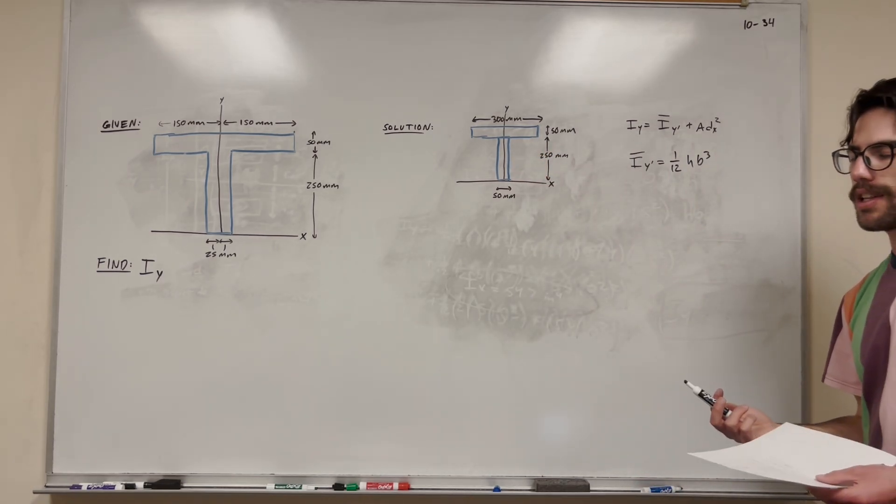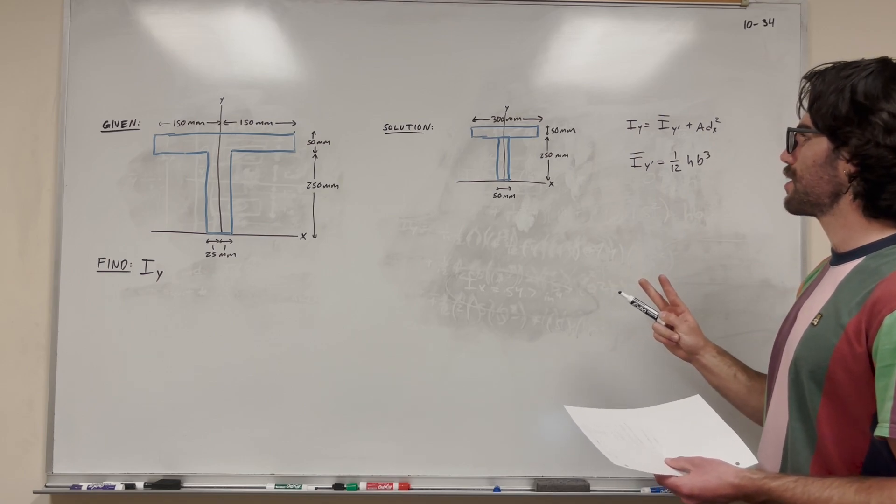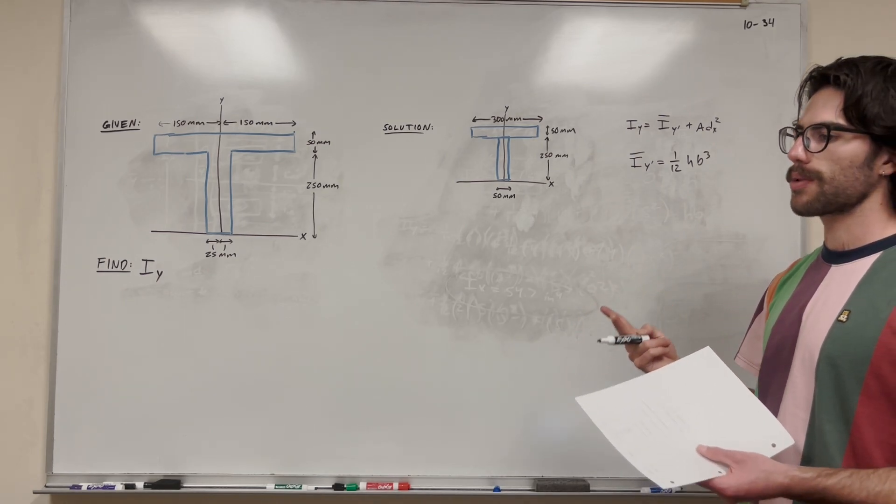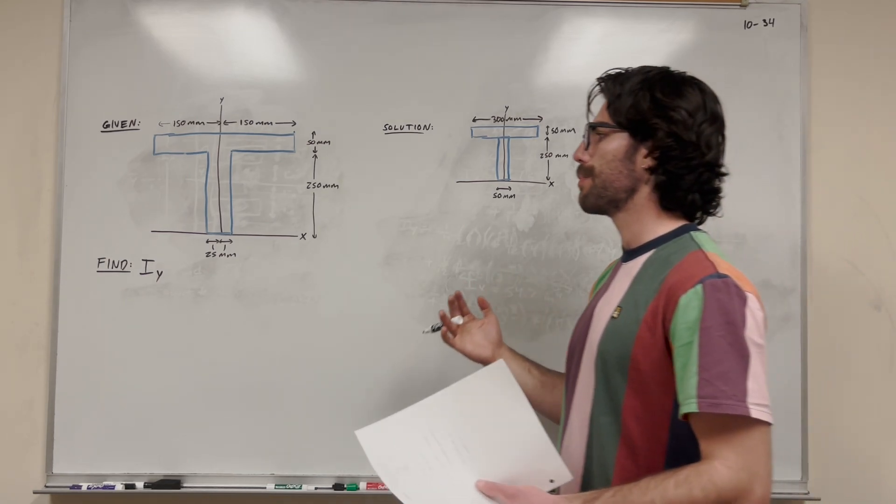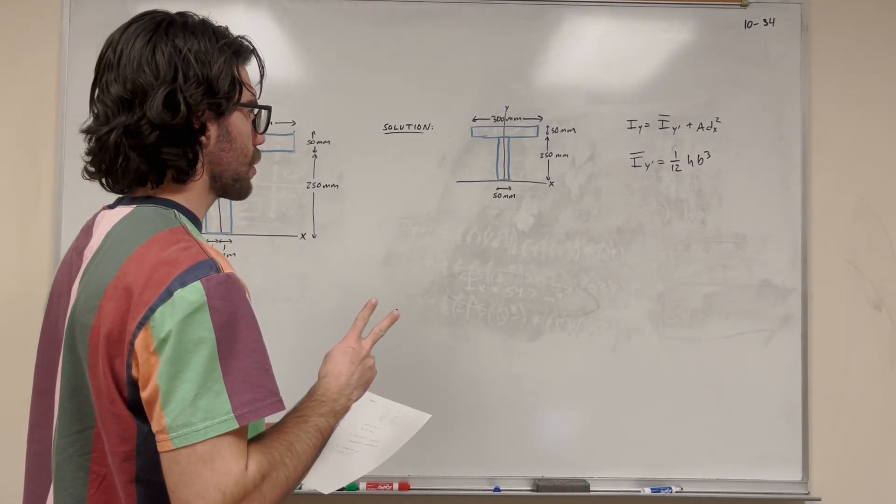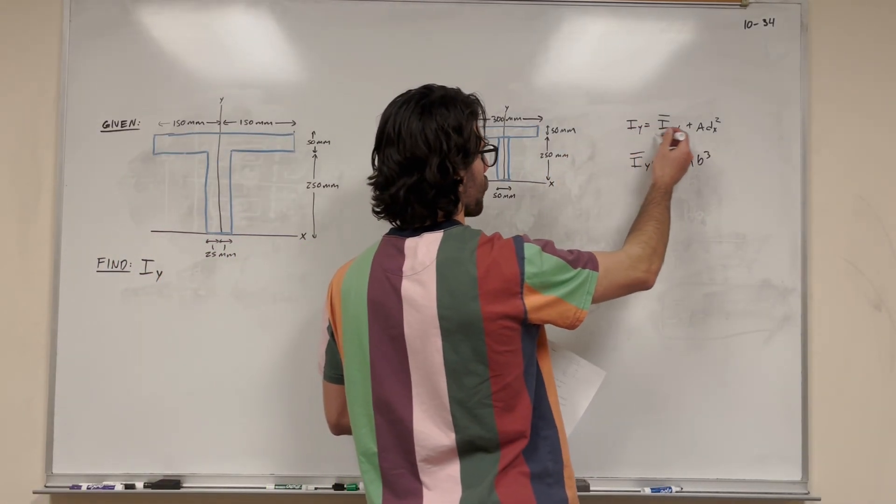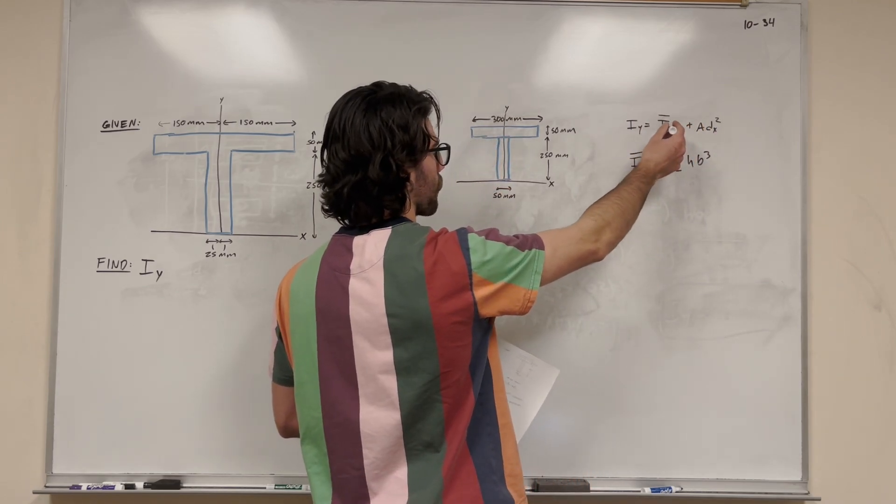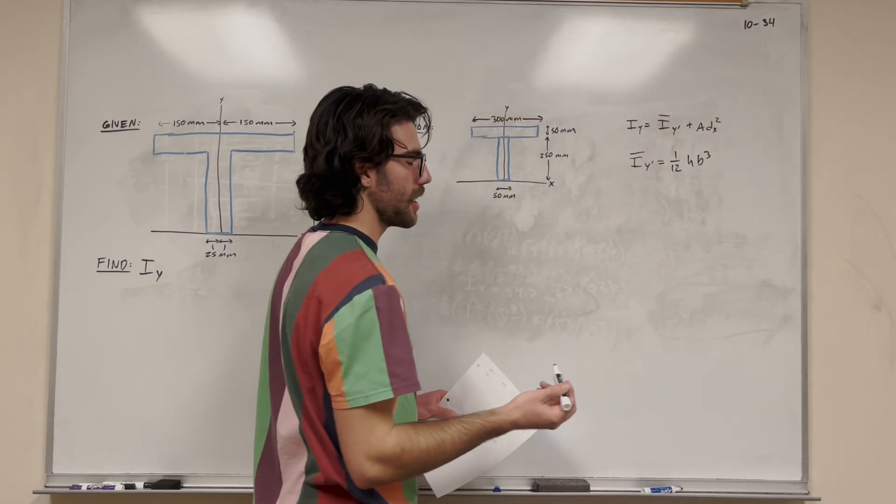We're going to use the parallel axis theorem now that we have two separate beams, basically two separate rectangles. We're going to use the parallel axis theorem to combine them together to get one moment of inertia. Let's just go ahead and do the equation. What we're doing is we're going to use this equation and add this part up for both rectangles.